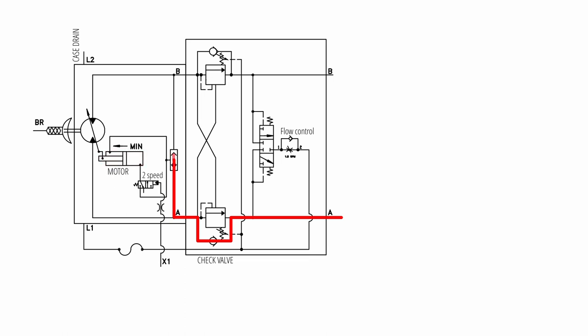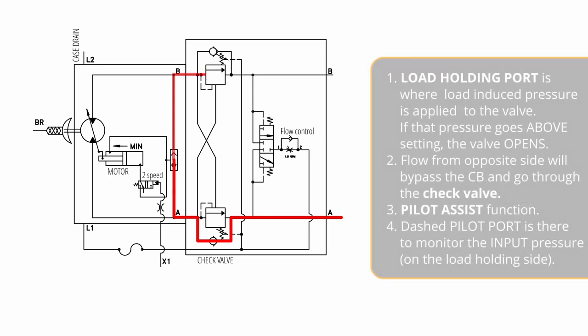After passing through the motor, oil enters the low pressure line. This is where things get interesting. The oil arrives to the load holding port of the valve. When pressure reaches the set value, the valve will open and allow the oil to flow from port 1 to port 2.